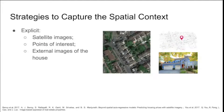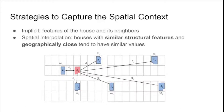There are some strategies used to capture the spatial context of a house. Previous approaches use satellite images of the region around the house, points of interest around the house, and also external images of the house. Another approach uses features of the house and its neighbors. The main assumption of spatial interpolation is that houses with similar structural features that are geographically close tend to have similar values. So given a house Z0, we estimate its price based on the structural features of surrounding houses and their distance to Z0.